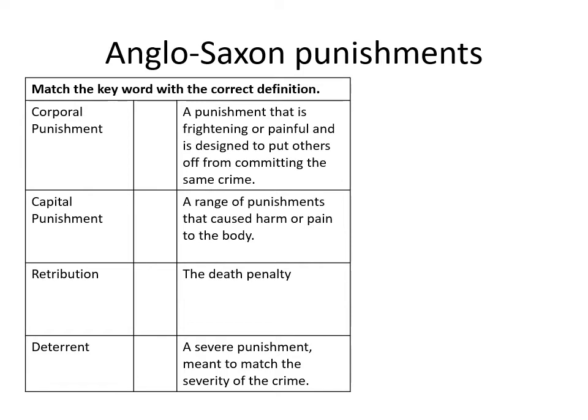Corporal punishment refers to a range of punishments that cause harm or pain to the body. Capital punishment refers to punishments that are the death penalty. Retribution is a severe punishment meant to match the severity of the crime — literally making somebody pay. And a deterrent is a punishment that is frightening or painful and is designed to put others off from committing the same crime. Well done for giving this a go — you may wish to replay this to check you've got all your answers.